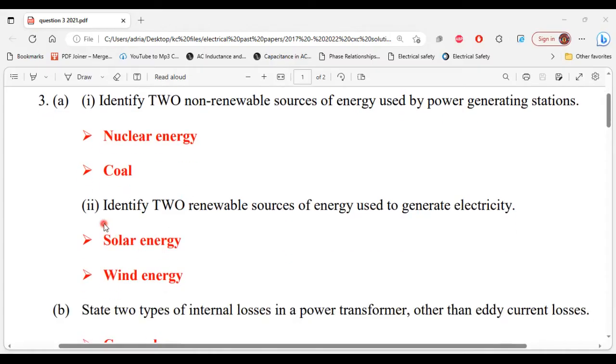All right, so let's move on to part two. It says identify two renewable sources of energy used to generate electricity. So the first one: solar energy, and the second: wind energy. All right, so that's it for part two and that's it for part A.